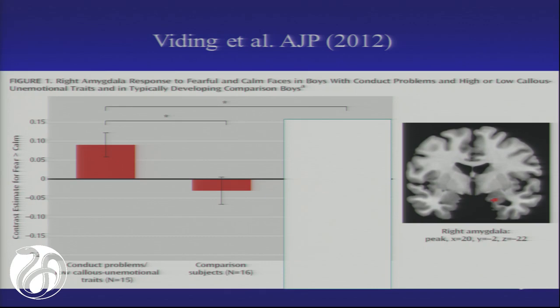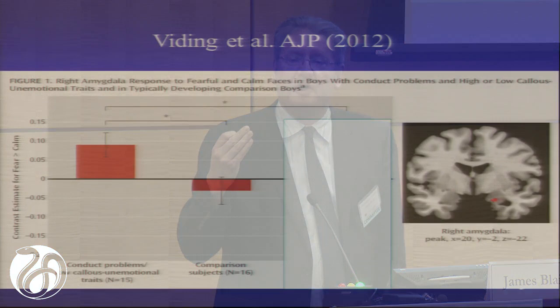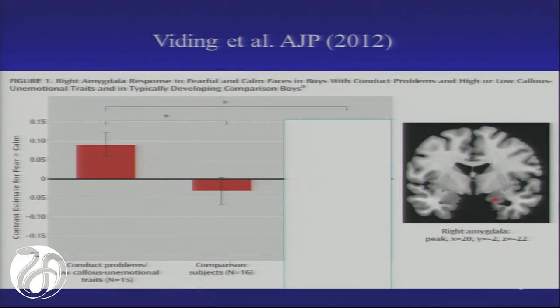One of the things that's so problematic about conduct disorder is that it's a very hodgepodge disorder. We have individuals who have conduct problems but lack callous-unemotional traits — they have increased emotional liability and increased risk for anxiety. Those individuals, even though they meet criteria for conduct problems, also show this increased amygdala response to threat stimuli. They're ready to show that reactive aggressive response.